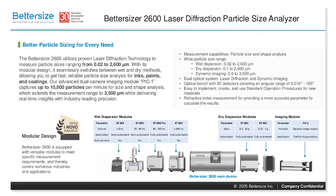With its unique optical design, the Betasizer 2600 boasts an exceptionally wide particle size range, handling everything from 0.02 to 2600 microns with wet dispersion and 0.1 to 2600 microns with dry dispersion. Beyond size, it also measures particle shape through the powerful Peak One Image Analysis module.